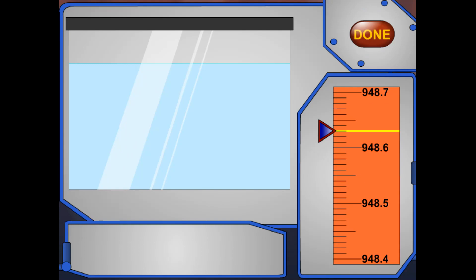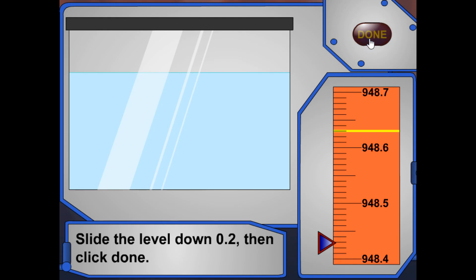You can make adjustments to this tank. Move the sliders at the bottom and side of the screen to change the water level. If you move the level of the water down 0.2 gallons from where it is now, where will it be? Slide the level, then click Done. Right! Moving the slider down two-tenths will lower the water level to 948.43.